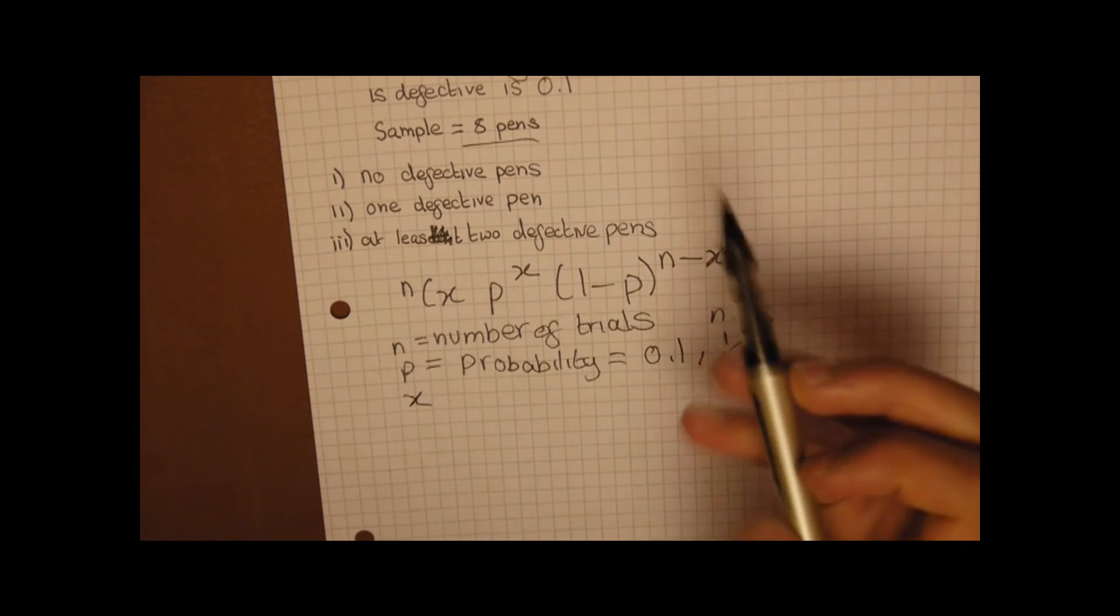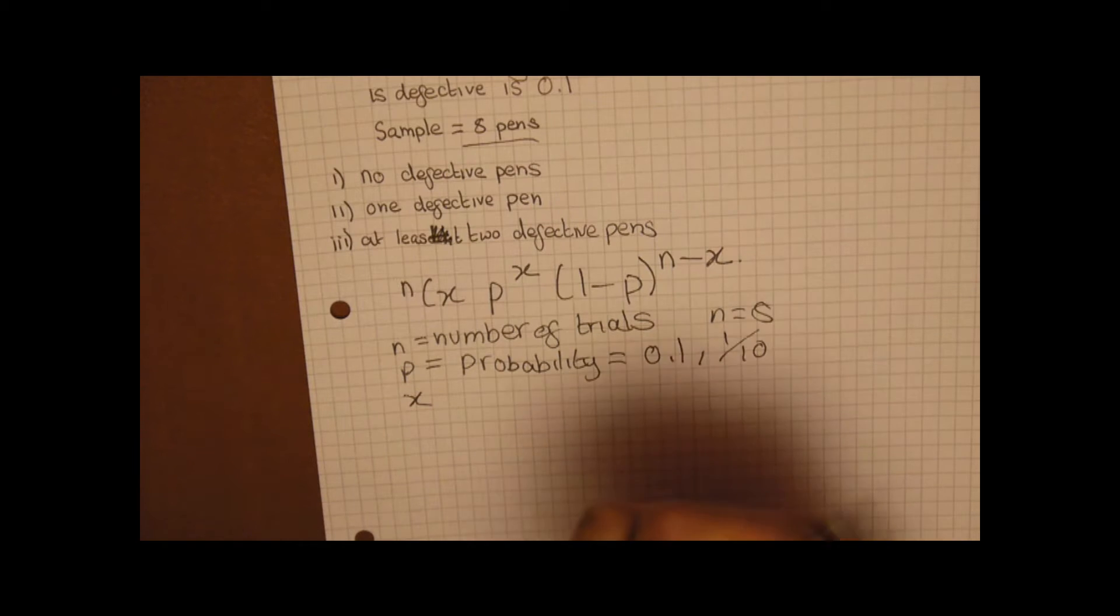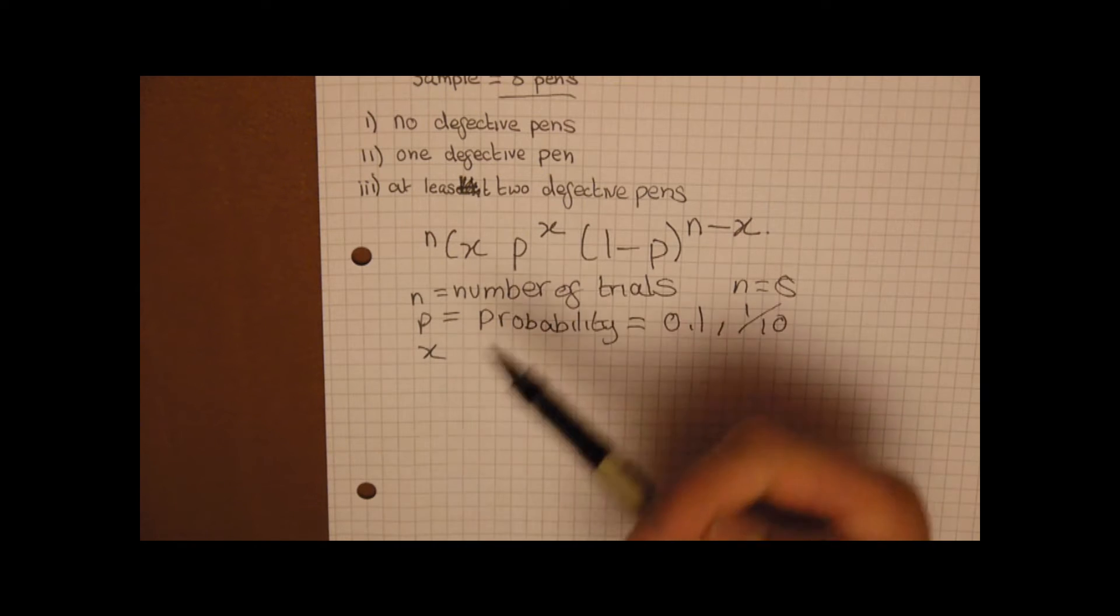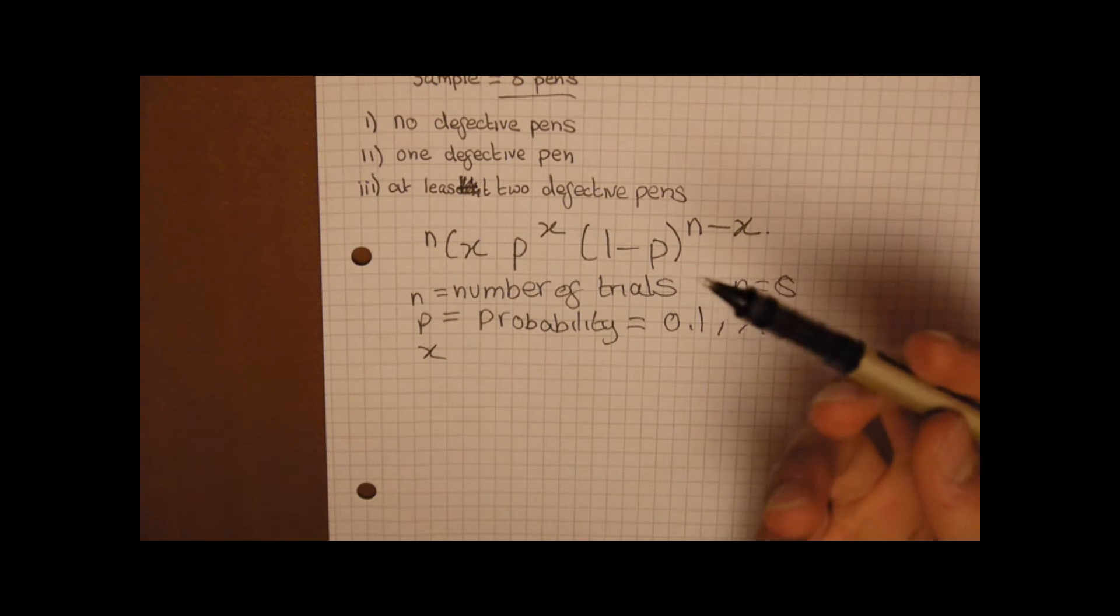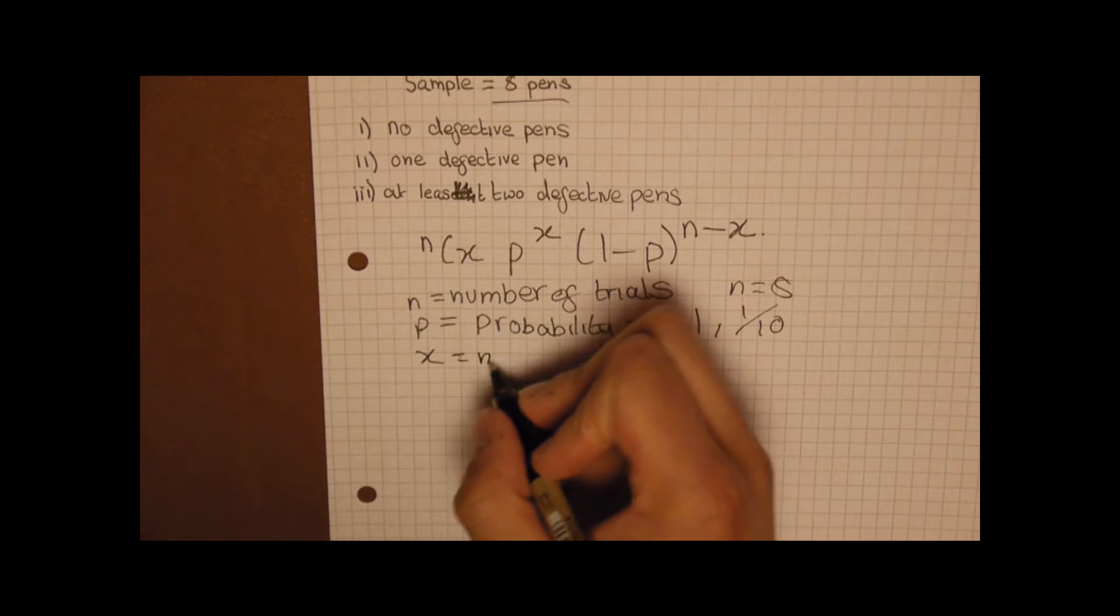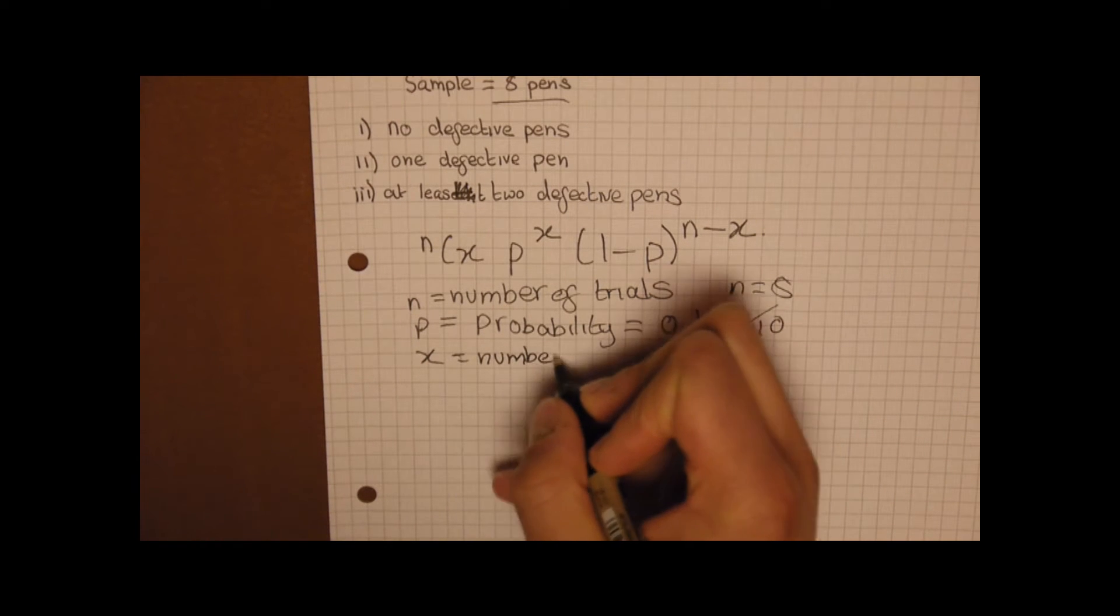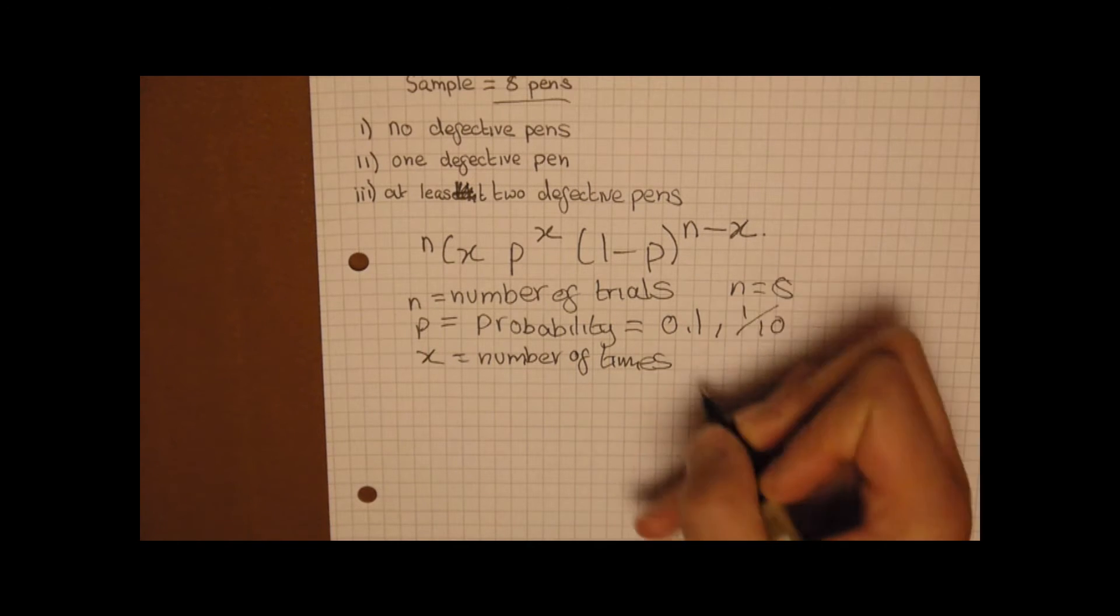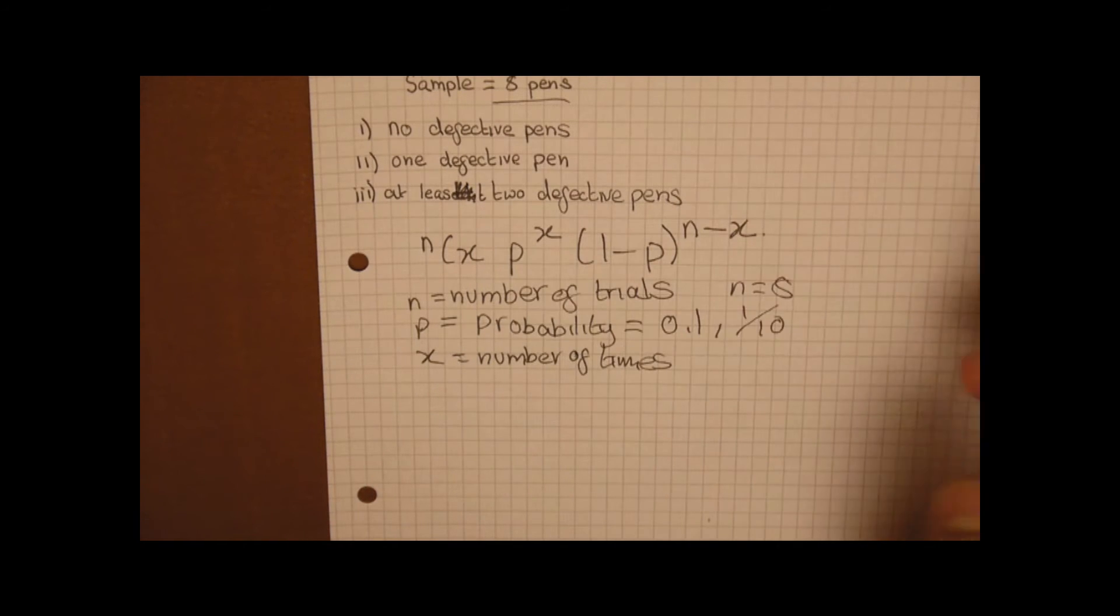And then finally you've got x. Now x is given in the question because it's effectively how many times do you get this result. So no defective pens would be 0, one defective pen 1, at least 2 is 6. So x is effectively your number of times. Although that's just the way I see it. x is usually the value that changes in the question.